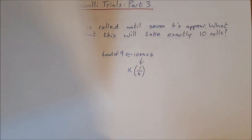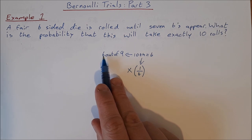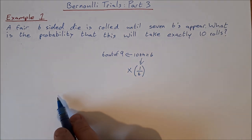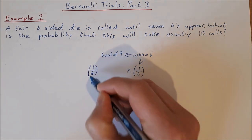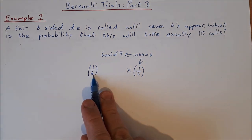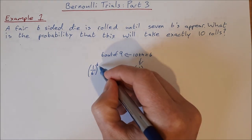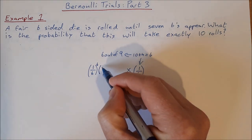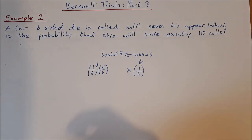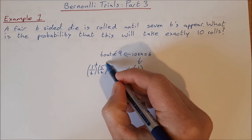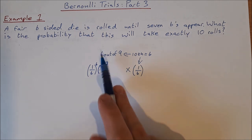The Bernoulli formula is n choose r times p to the power of r times q to the power of n minus r. We want six sixes out of nine throws. The probability of getting a six is one out of six, and we want six of them. The probability of not getting a six is five out of six, and we want three of those. The number of ways this can happen is nine choose six.